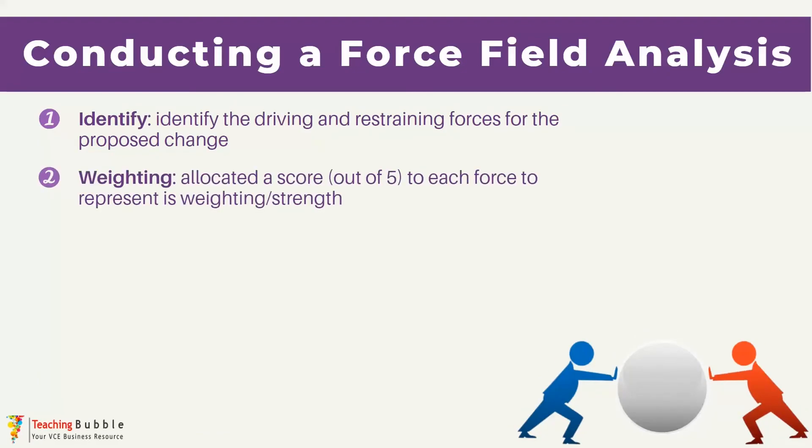Subsequently, each force would be assigned a numerical weighting ranging from 1 to 5. The number indicates the influence or strength of each force — a score of 5 would represent a substantial force, one that's going to be a significant supporter or cause significant issues during change, while a score of 1 would suggest a relatively weaker one. It's important to allocate these weightings because it's the strength of each force, not necessarily the number of forces, that will help determine the success of implementing the change.